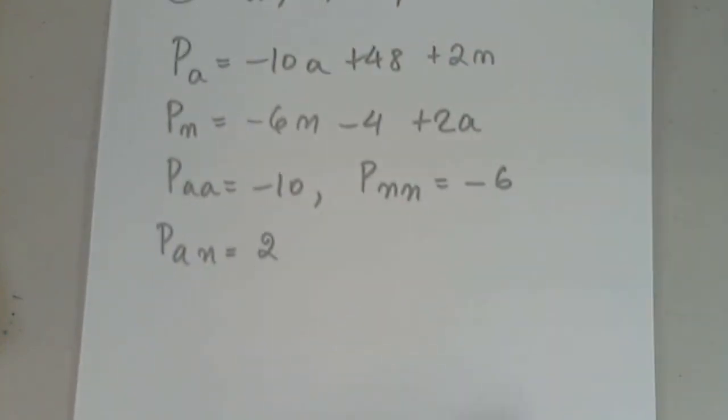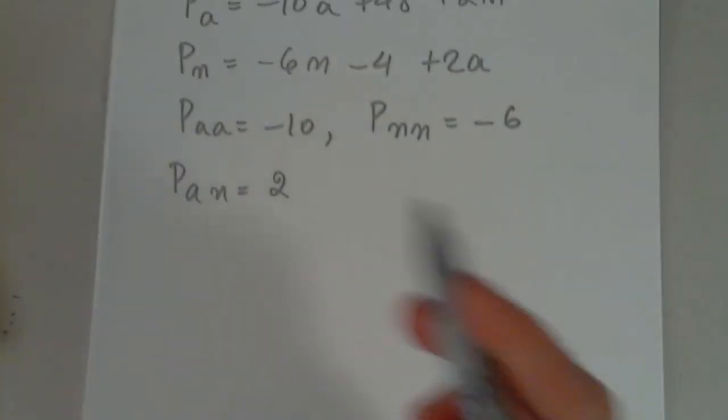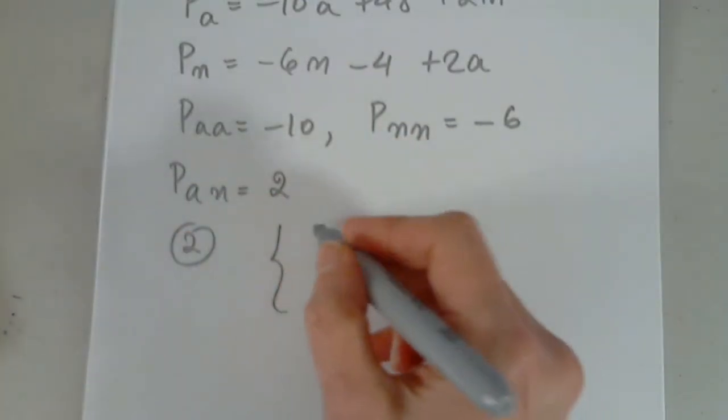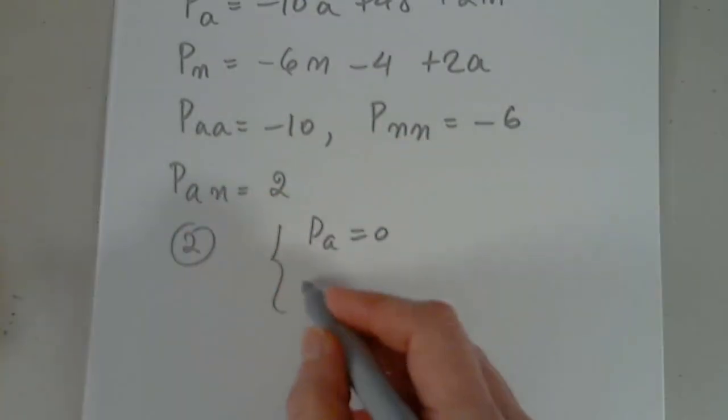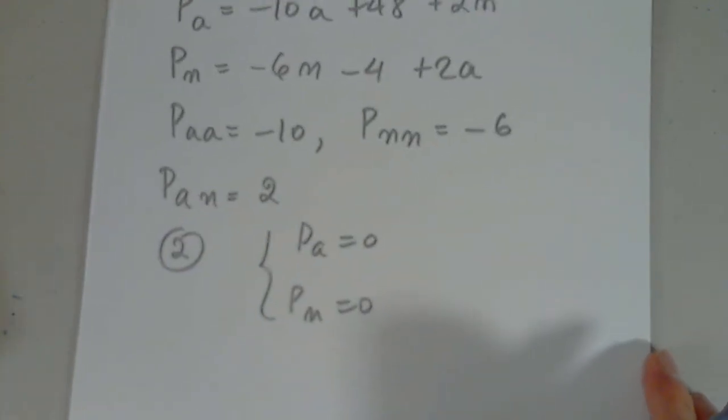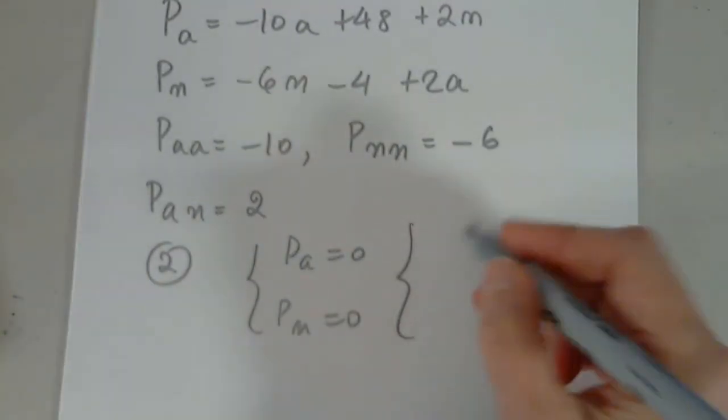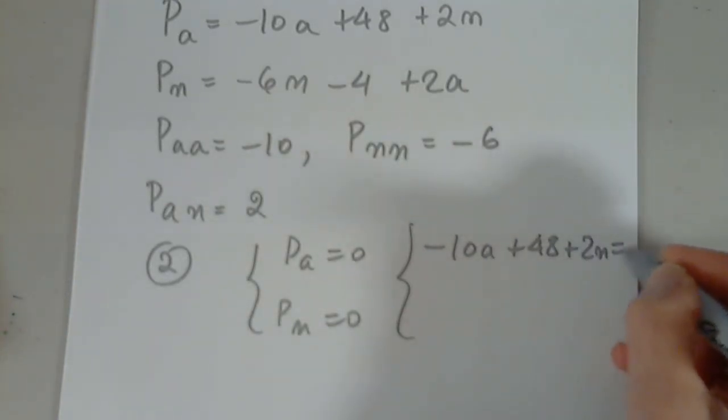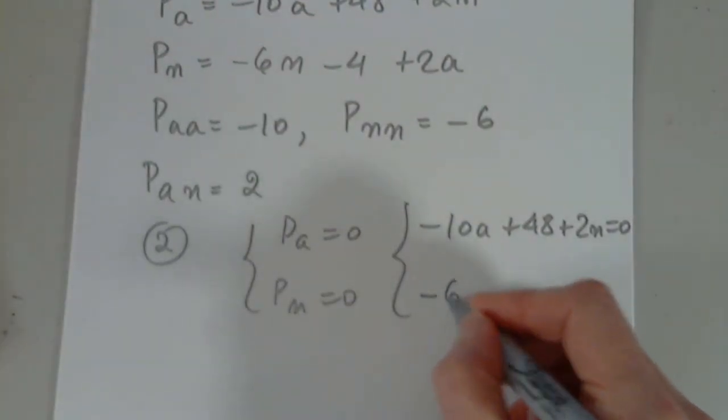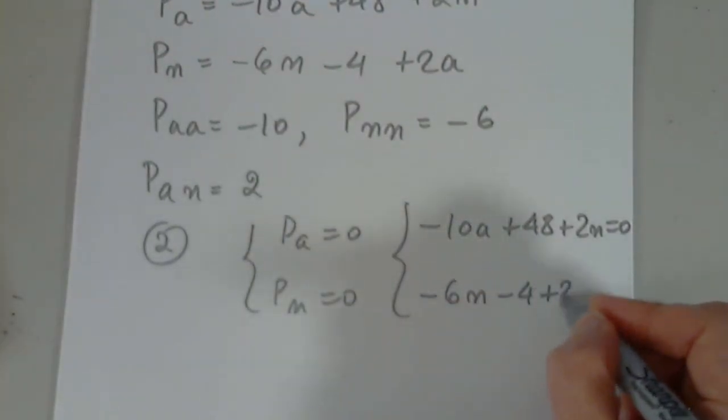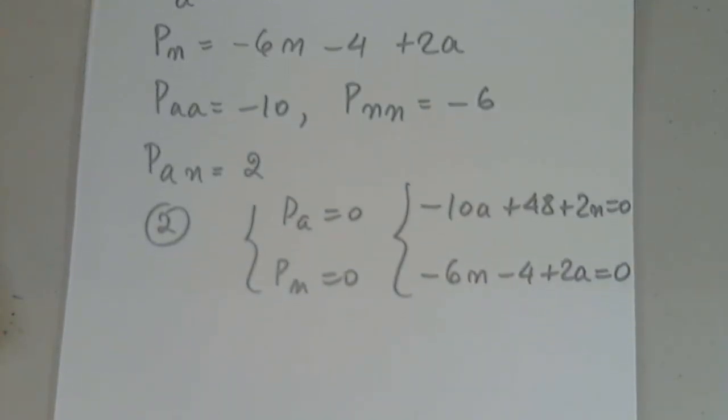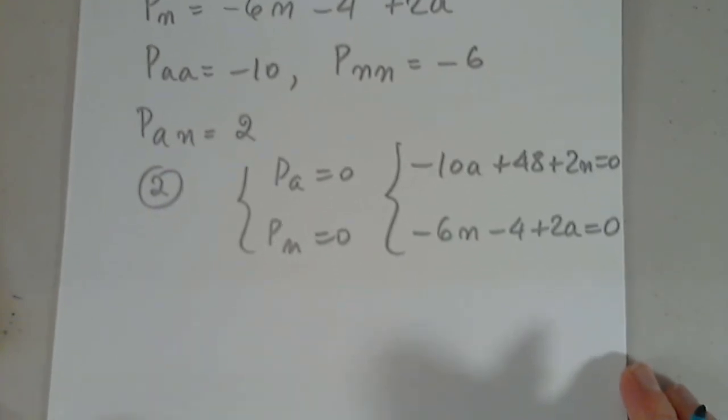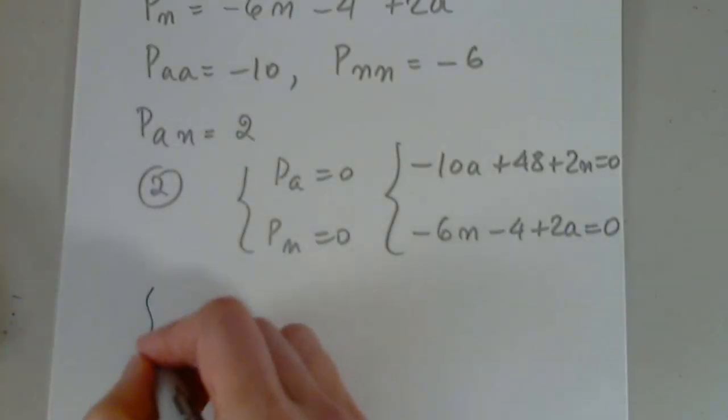In step 2. I have to create this system. And the system has Pa equals 0. And P sub n equals 0. Okay. Negative 10a. Plus 48. Plus 2n. Equals 0. Negative 6n. Minus 4. Plus 2a. Equals 0. A system of two linear equations in two variables. I have to clean it up. I have to rearrange it. I have to do a lot of work before I start.